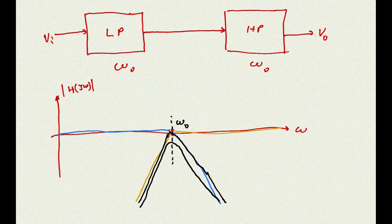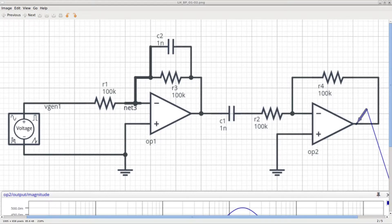But how do we put in cascade two filters without the second influencing the first? Simple — by using active lowpass and highpass filters, which we studied in the previous episode on filters. Here is the actual schematic of such a filter, which I have drawn using the simulator I introduced in previous episodes.